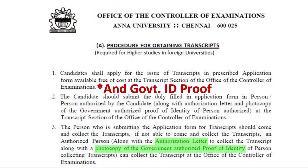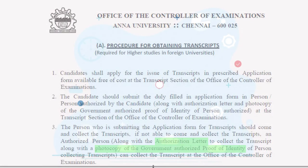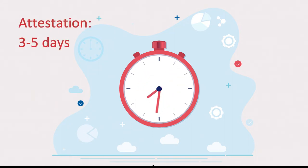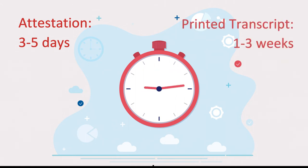Once you have applied for transcripts, your university might take some time to issue them. If it is just attestation, it will take around three to five days. If it is a newly printed transcript, it will take from one to three weeks.